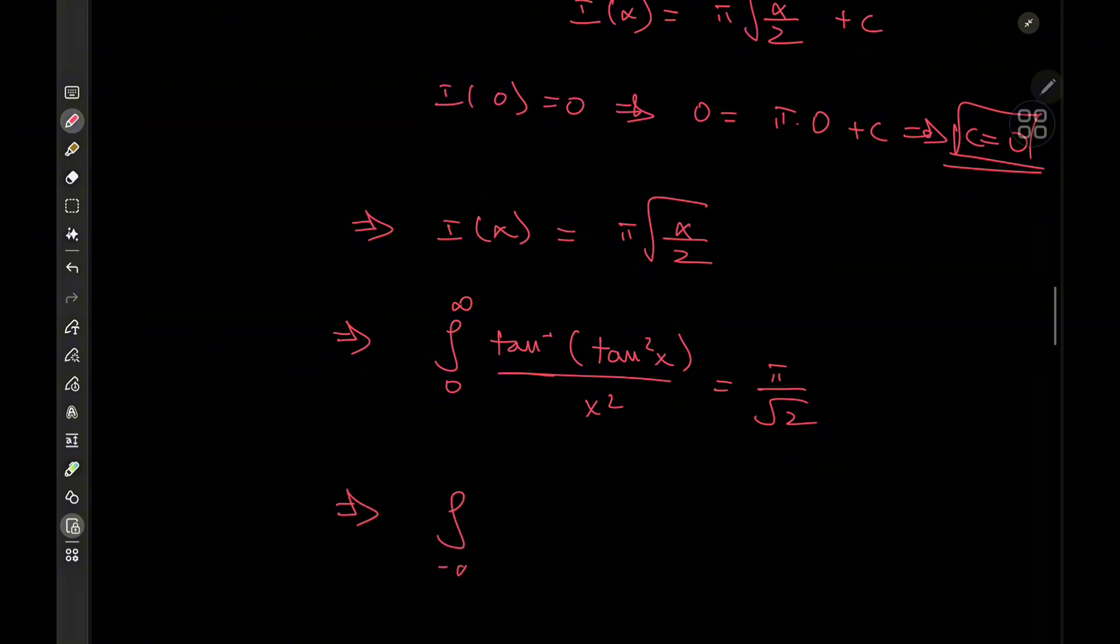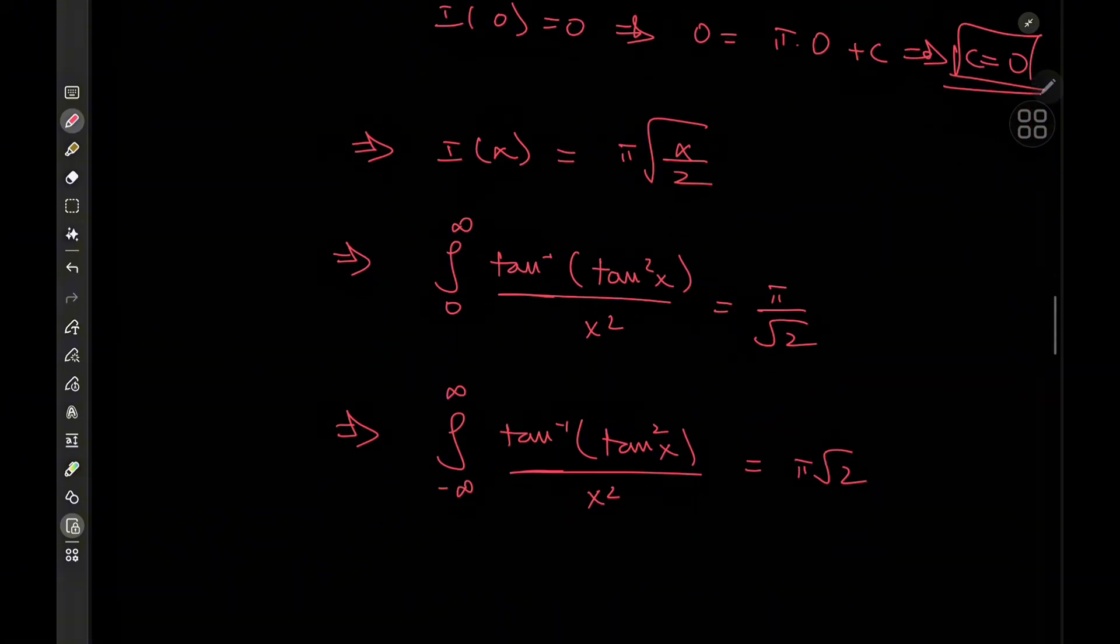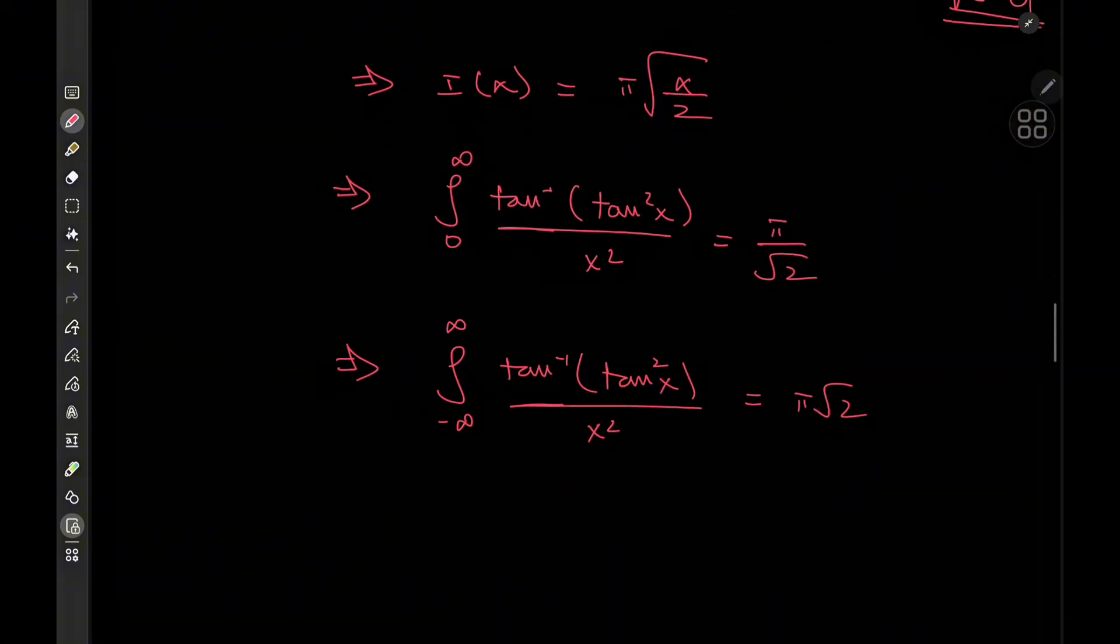And of course, the integral from negative infinity to infinity of arctangent of tangent squared x over x squared equals 2 times that result. So 2 over root 2 is root 2. So pi times root 2 is the result of the other target integral. I hope you enjoyed the video. Be sure to like and subscribe. Drop me a follow on Instagram as well, and I will see you guys in the next one.